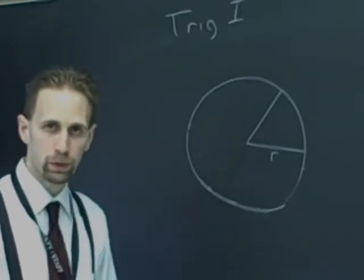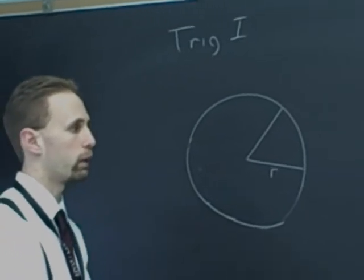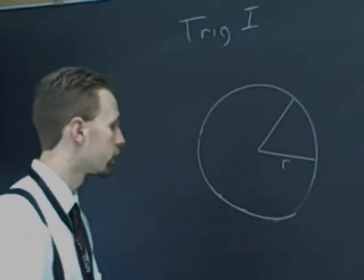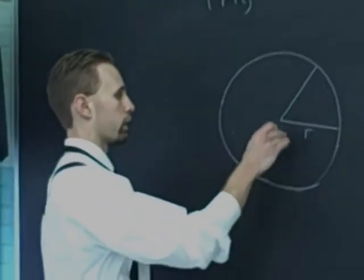When we start trigonometry, we need to know what a radian is. A radian is just another way to measure angles. What does it mean? What is the definition of a radian? Well, here we go.